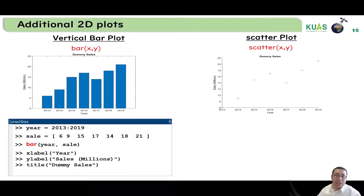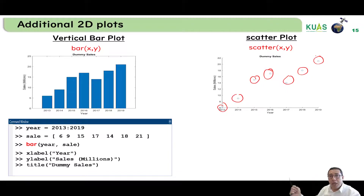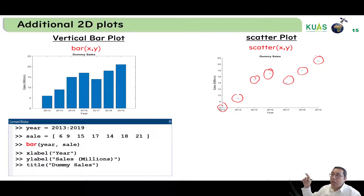The scatter plot has a dot for each x and y value pair. It is very similar to the plot command if you set the line to none and only use markers — it will be very similar to the scatter plot.